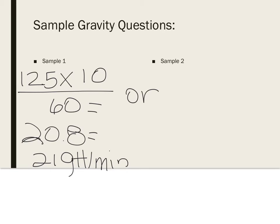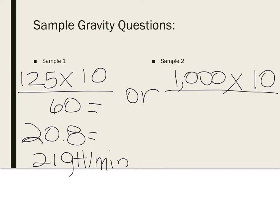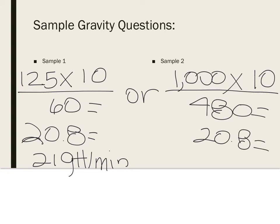The other way is method two — you don't figure out your rate first. Instead, plug in the total amount of fluids, which is 1,000, times the drip factor from the packaging (which was 10), over the total number of minutes the infusion is to run. Since it's 8 hours, that's 8 times 60, which is 480 minutes. So 1,000 times 10 divided by 480 gives the same answer of 20.8, or rounded up, 21 drops per minute.